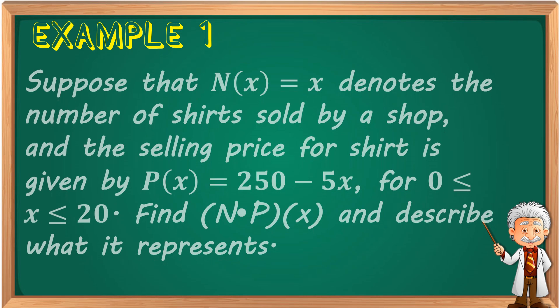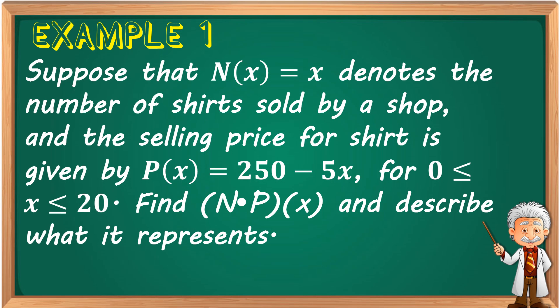Let's have Example 1. Suppose that n(x) = x denotes the number of shirts sold by a shop, and the selling price for a shirt is given by p(x) = 250 − 5x, for 0 ≤ x ≤ 20. Find n times p(x) and describe what it represents.